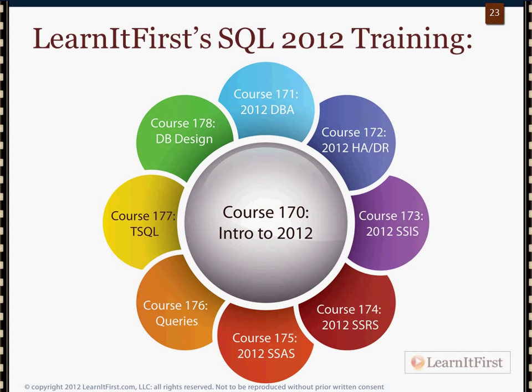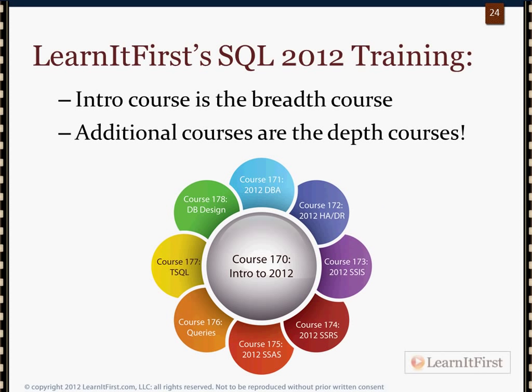You want to get into the depth — that's where these other courses come into play. For example, if you want to learn how to actually implement clustering, I'll talk to you about it in Course 170, but we won't actually do clustering. Then you would go to the high availability disaster recovery course.